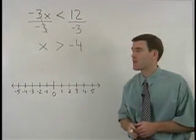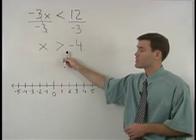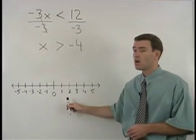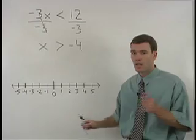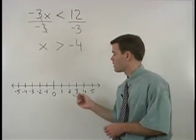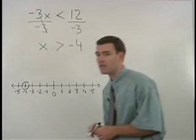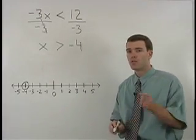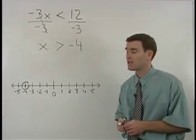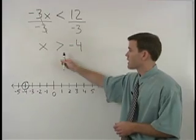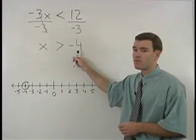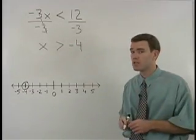Our next task is to graph x is greater than negative 4 on a number line. And to do that, we start with an open dot at negative 4. The reason we use an open dot at negative 4 is that x is greater than negative 4 but it is not equal to negative 4.